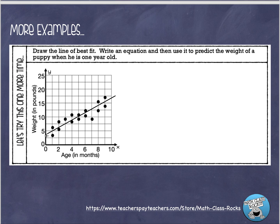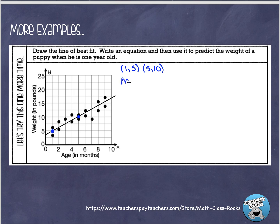Now we'll write an equation. I'm looking on my trend line for good points — remember, they don't have to be the black dots from the scatter plot. I just want good points right on intersections. I think this is a good point here, and this one in the middle too. My ordered pair for the first point is (1, 5), and the second ordered pair is (5, 10).